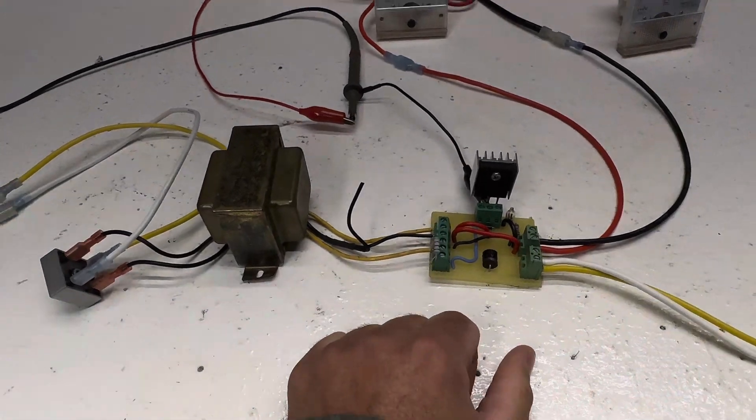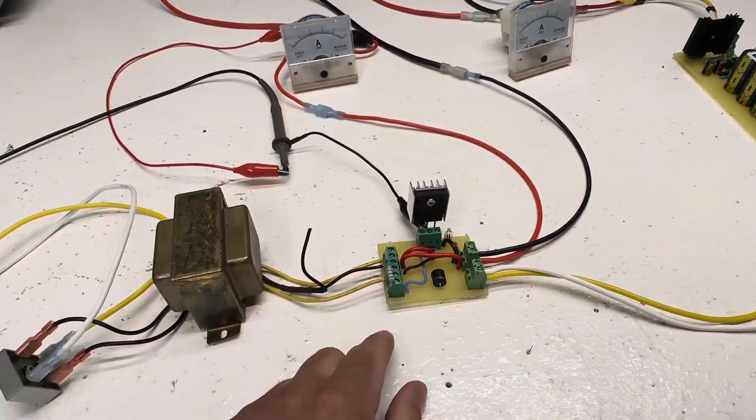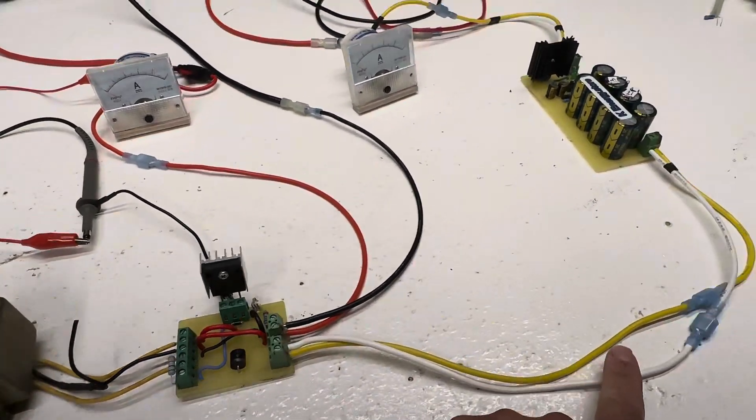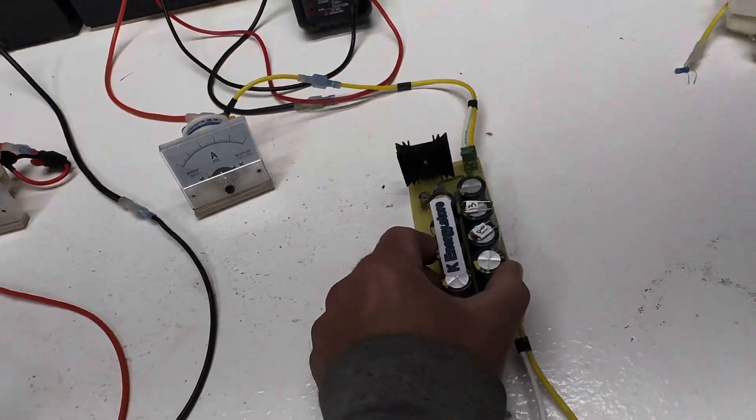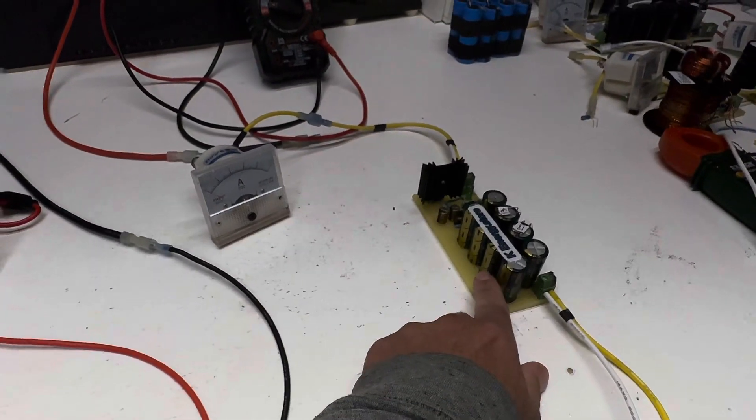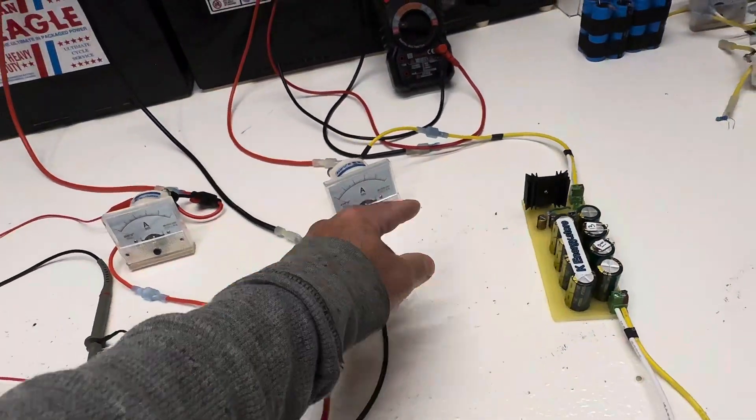We have the transistor, the output diode that's going over here to the cap. This is 8.8, 10,000 at 25 volts, and then it's been triggered at 15 volts, so we'll be charging this battery right here. This will be our input battery.